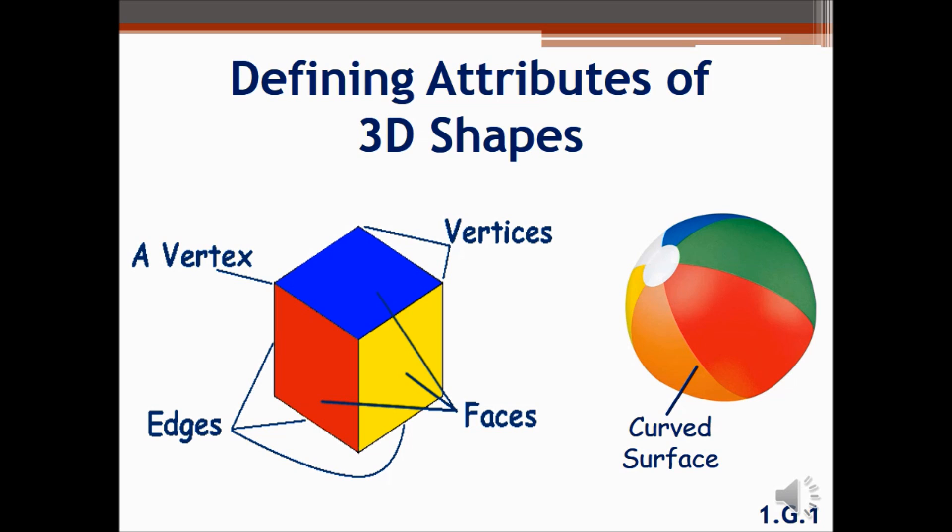A face is any flat surface of a 3D shape. This means that the surface of a sphere is not a face. An edge is a straight line where two or more faces meet. A vertex is where two or more points meet. For a complete description of the defining attributes of each shape, visit the Vocabulary section at the back of the Cumberland County Unit Analysis.